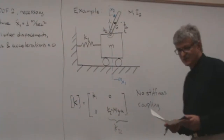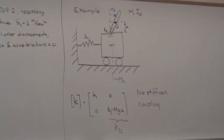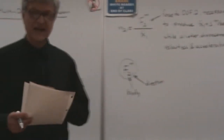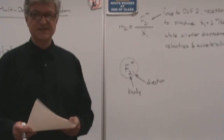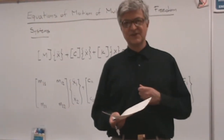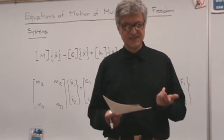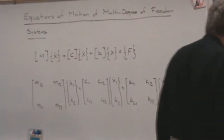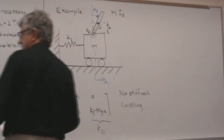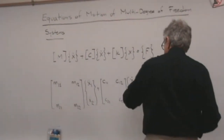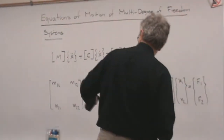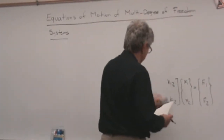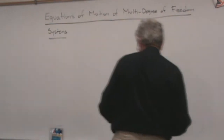Now we'll continue this example and find the mass matrix, also called the inertia matrix. We'll also discuss another method using energy principles, extending what we did for single-degree-of-freedom systems. This system has no damping, so the damping matrix is zero and we only need to determine the mass matrix.